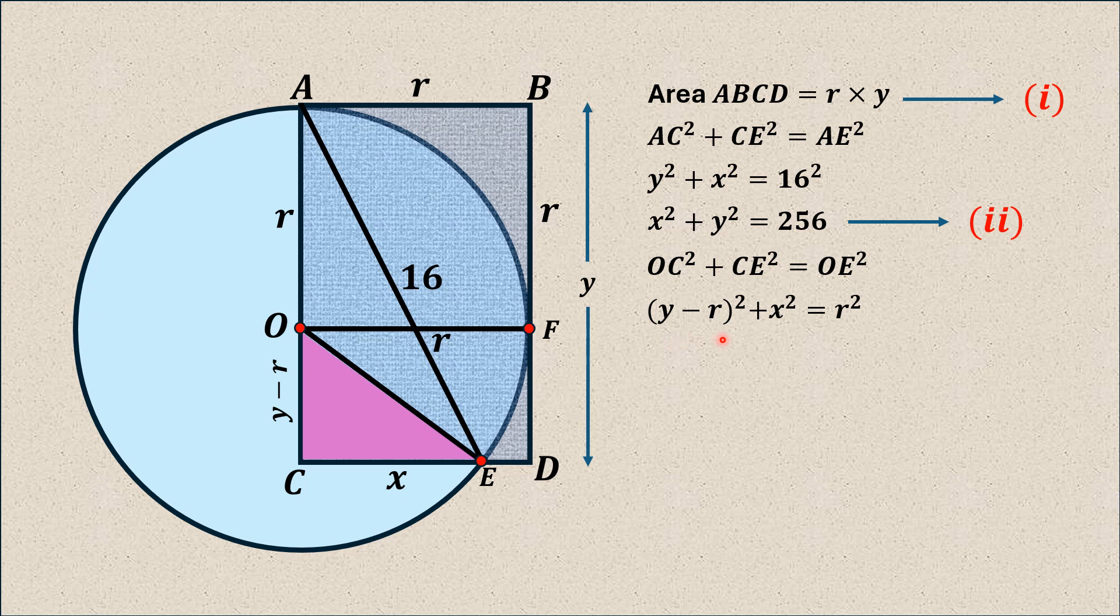Substituting these all values and expanding this binomial (y - r)², we have y² + r² - 2ry + x² = r². So r² on the left and right will cancel out, and we have x² + y² - 2ry = 0. From equation number two, we have the value of x² + y² which is 256. Substituting this value in this equation, we have 2ry = x² + y².